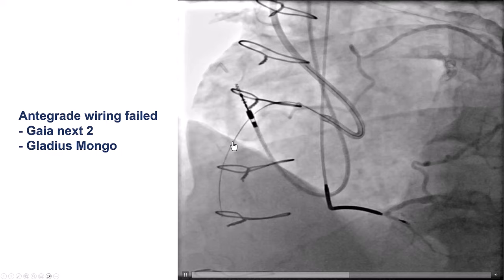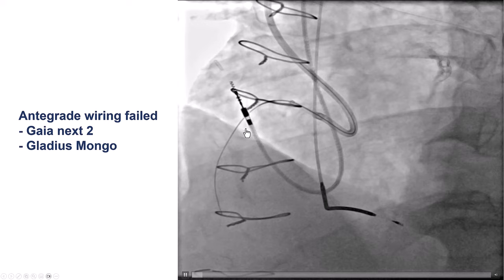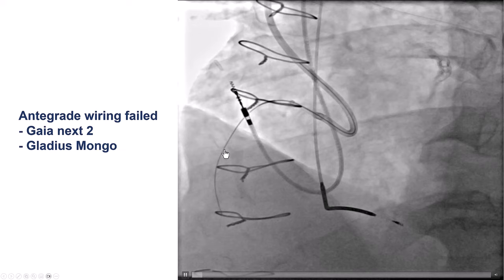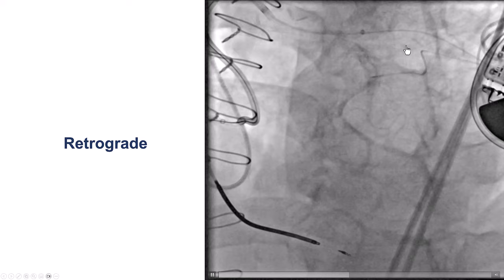The wire is not in the vessel architecture, so after multiple attempts, we decided to switch approach. In this particular injection, we can see a little better the anatomy — there is actually some patent lumen in the middle right coronary artery. So we went retrograde.